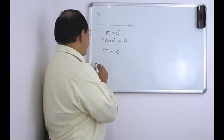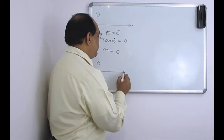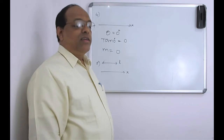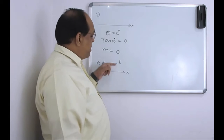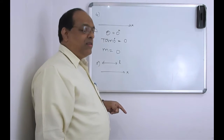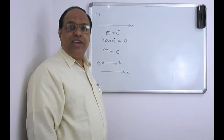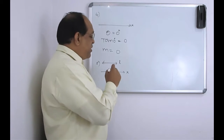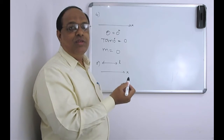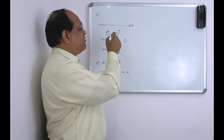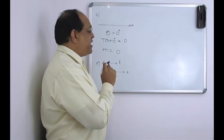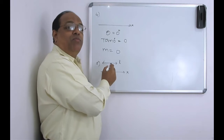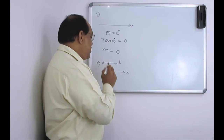Similarly, if you find the slope of a straight line which is parallel to the x-axis: parallel lines have the same angle with the x-axis, so tan 0 is also 0. Therefore, the slope of any line parallel to the x-axis is also 0.